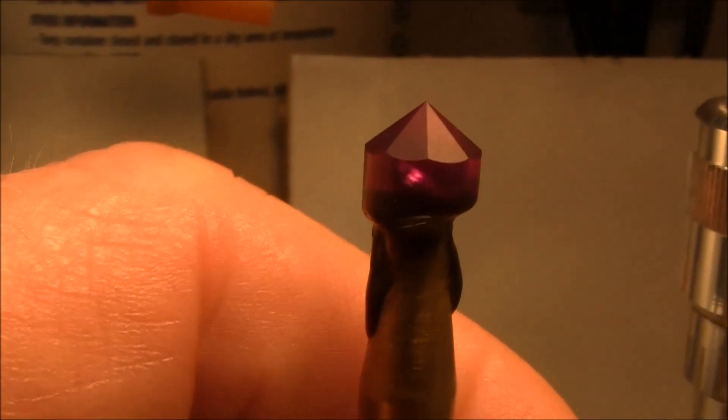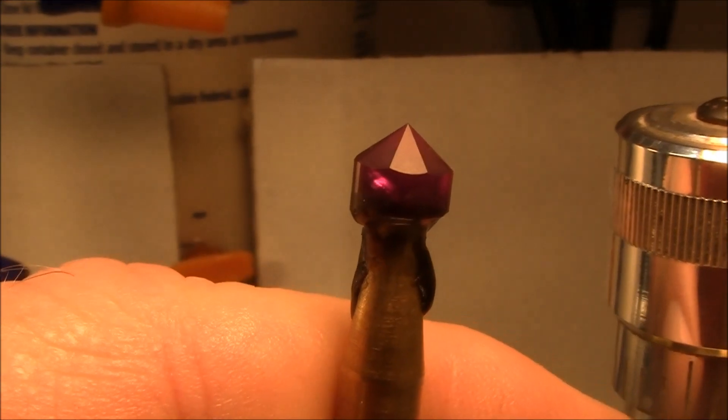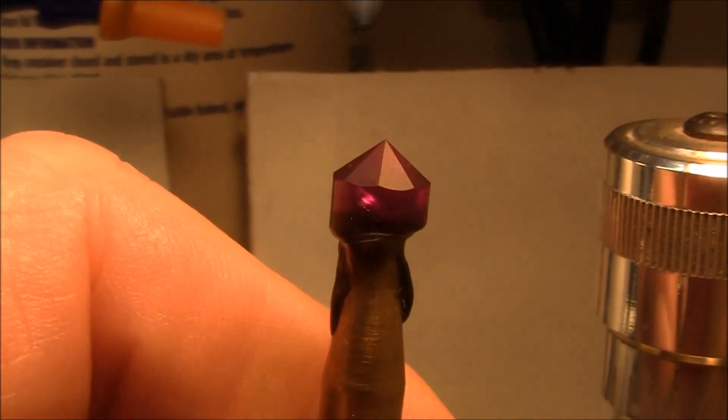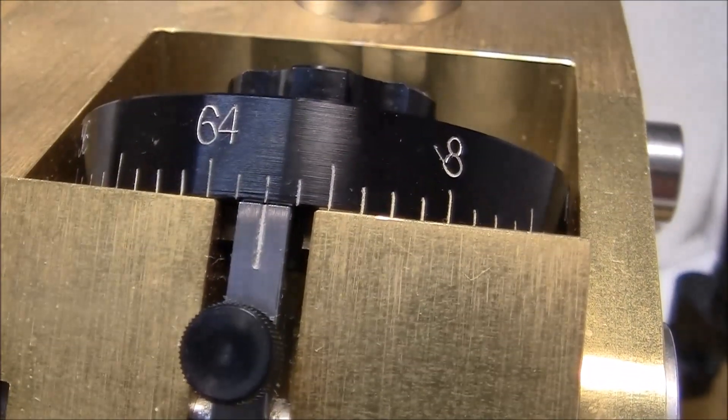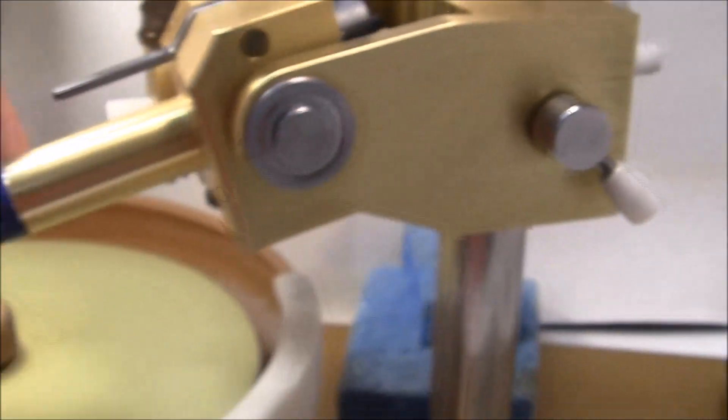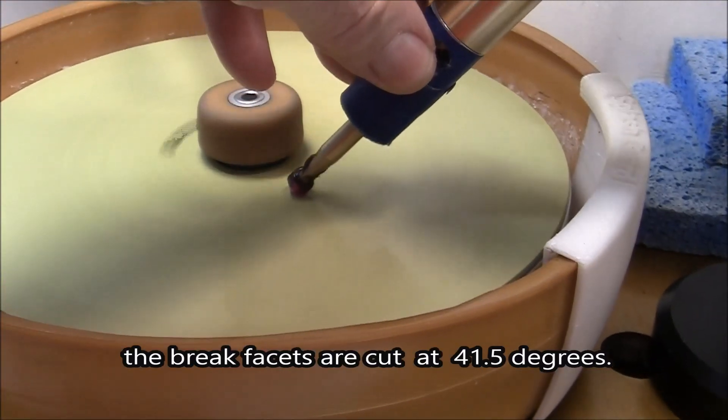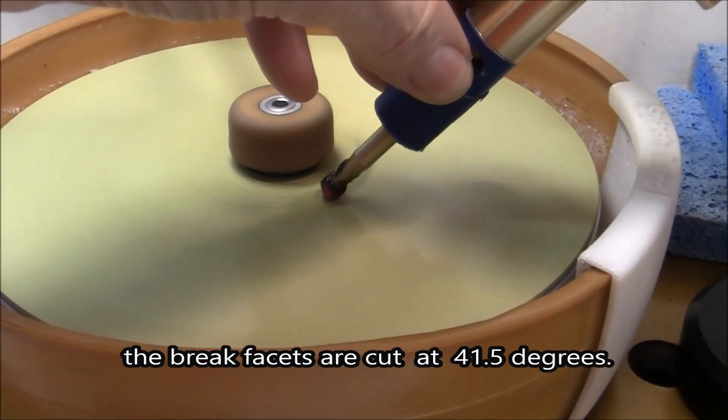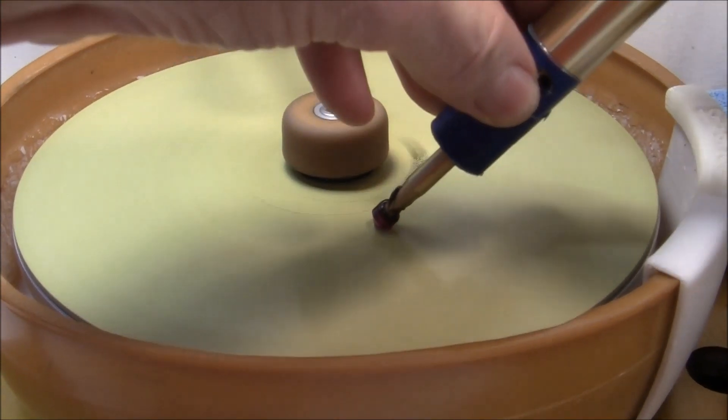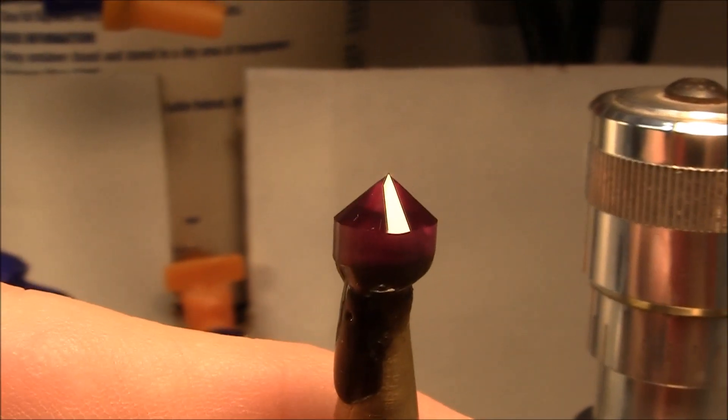But anyway, I'll go ahead and try and see if I can cut down, and when I do the crown, whether that'll come out or not. At least it'll be near the girdle anyway. Starting to pre-polish the brake facets with 8,000 diamonds. This glass is noisy. The stone's now completely polished.